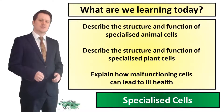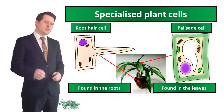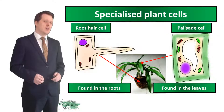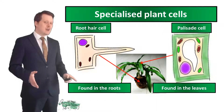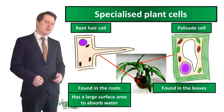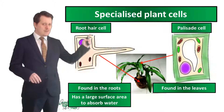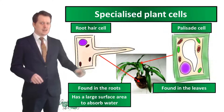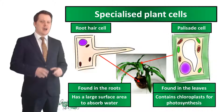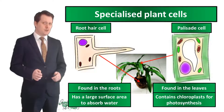So now we can describe the structure and function of some specialized animal cells. Next we're going to look at some specialized plant cells. We've got the root hair cell, which is found in the roots and has a large surface area to absorb water. We also have the palisade cell, found in the leaves, which has lots of chloroplasts so it can conduct photosynthesis.